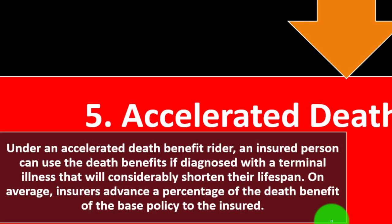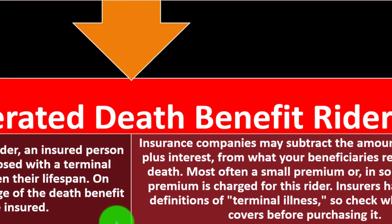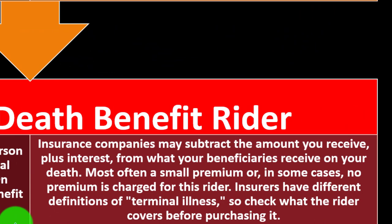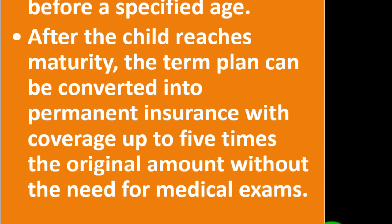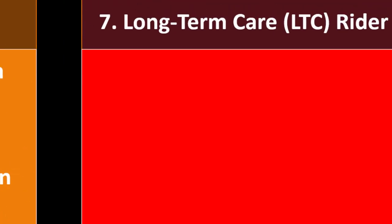On average, insurers advance a percentage of the death benefit to the insured. Insurance companies may subtract the amount you receive plus interest from what your beneficiaries receive upon your death. Most often a small premium — or in some cases no premium — is charged for this rider. Insurers have different definitions of 'terminal illness,' so check what the rider covers before purchasing. Number six: the Child Term Rider. This rider provides a death benefit in case a child dies before a specified age. After the child reaches maturity, the term plan can be converted into permanent insurance with coverage up to five times the original amount without the need for medical exams.